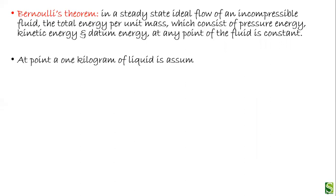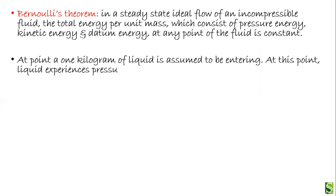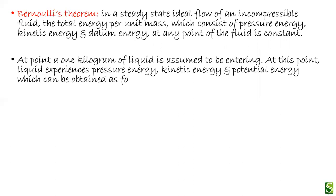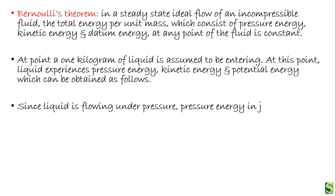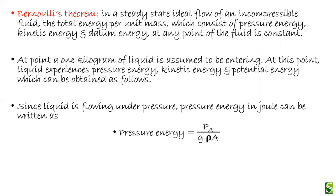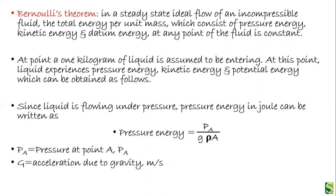At point A, one kilogram of liquid is assumed to enter, experiencing all three types of energies: pressure energy, kinetic energy, and potential energy. Since the liquid is flowing under pressure, the pressure energy in joules is written as P_A divided by (g × rho_A), where P is the pressure at point A, g is acceleration due to gravity, and rho_A is the density of the liquid.